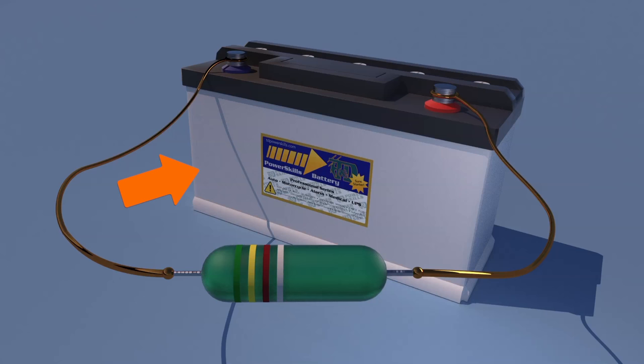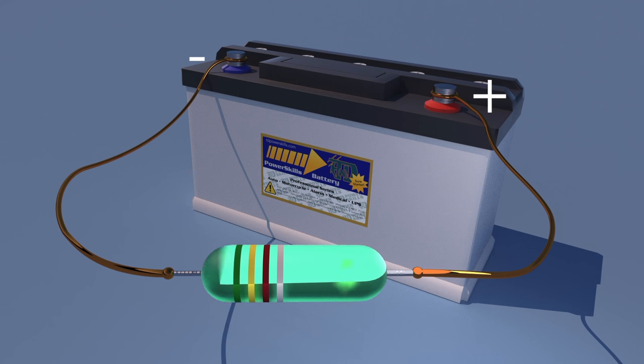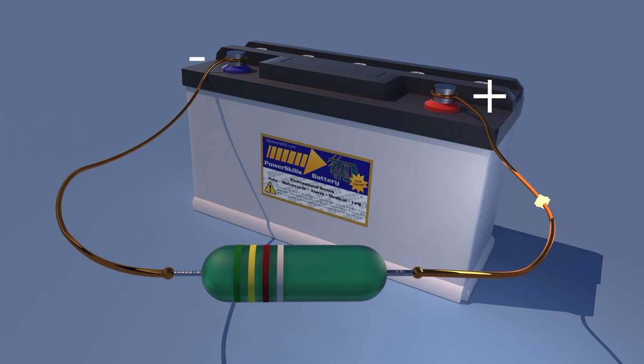This circuit has a DC power source, a battery. The battery has a negative terminal and a positive terminal. Current flows from the negative terminal of the battery through the circuit, through this resistor, and back to the positive terminal of the battery.